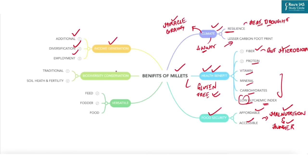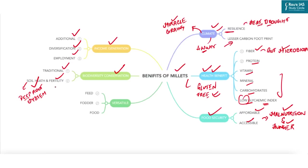Millets also contribute to biodiversity conservation. They are a diverse group of grains including several varieties and species, so by cultivating millets, farmers can conserve biodiversity and preserve traditional knowledge and practices. Another benefit is soil health — millets have a deep root system that helps improve soil structure and fertility. They have low fertilizer and pesticide requirements, which reduces the cost of cultivation and prevents soil degradation. Rotating millets with other crops helps reduce the risk of soil-borne diseases.